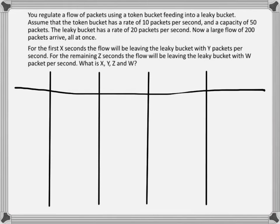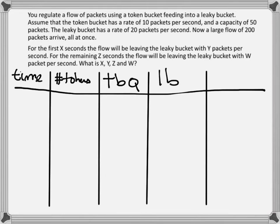What we need to keep track of is: first the time, the number of tokens, the token bucket queue, the leaky bucket queue, and then the total number of packets which we have processed.